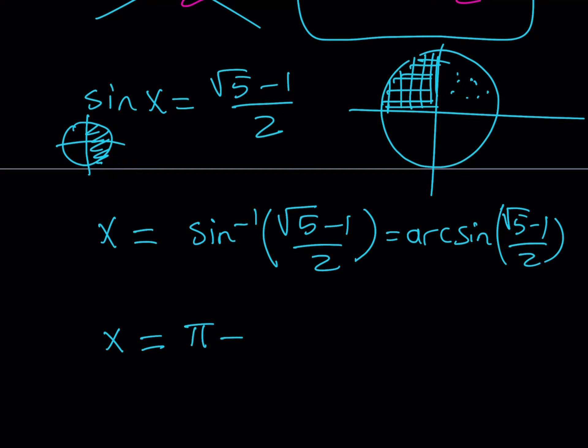So the actual x value that we're going to be accepting for the solution is π minus sine inverse or arc sine of root 5 minus 1 over 2. You have to subtract the angle from π which is 180 degrees in radians because you have to be in the second quadrant.